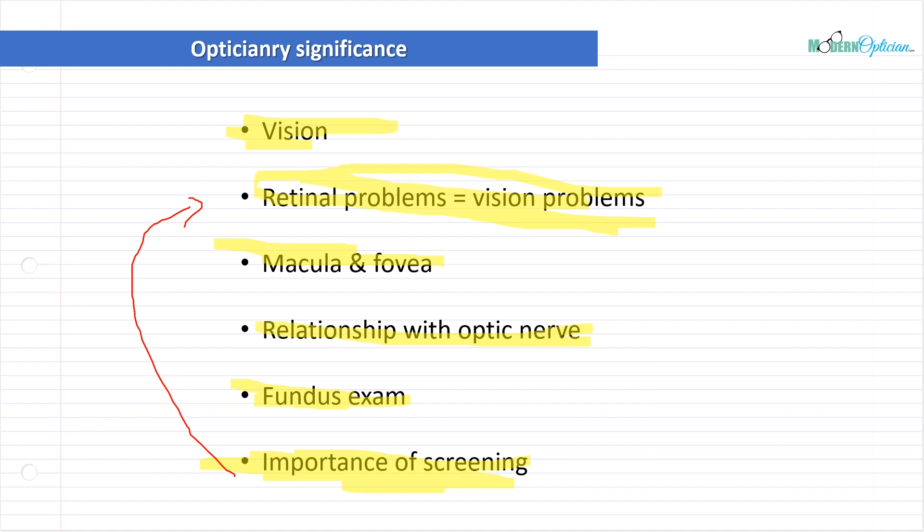So that covers what we're going to do with the retina today. We'll talk more about the retina in different capacities throughout the following lectures. For now, you've got a pretty good basis for what the retina is, what it looks like, and what its main job is. We're going to build on that more in the future. Next, we're going to move on to the optic nerve in the next lecture.